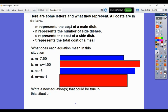M represents the cost of a main dish. N represents the number of side dishes. S represents the cost of a side dish. And T represents the total cost of a meal.